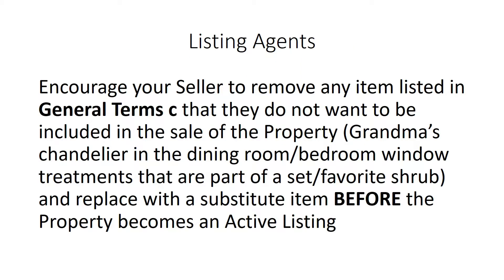A list of items included in the sale of residential real estate is not included in the listing agreement. Listing agents should be aware of the wording in the purchase and sale agreement and encourage your sellers to remove any items listed in the general terms C that they do not want included in the sale of their property — such as grandma's chandelier in the dining room, window treatments that are part of a matched set, or maybe a shrub that has personal meaning to them — and replace with a substitute item before the property becomes an active listing.